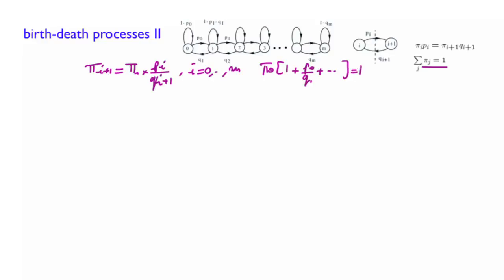Let's illustrate the details of this procedure on a special case. Let's assume that all the p's are the same, and all the q's are the same. So at each point in time, if we are somewhere in the middle, you have probability p of moving up, and probability q of moving down.